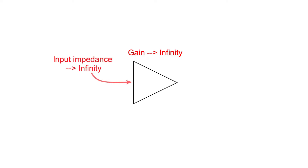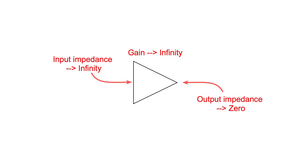The op-amp also has a very high input impedance and a low output impedance. For many applications the input impedance can be considered as infinite, and the loading on the previous stage ignored. The output impedance is zero, and again this can be ignored.